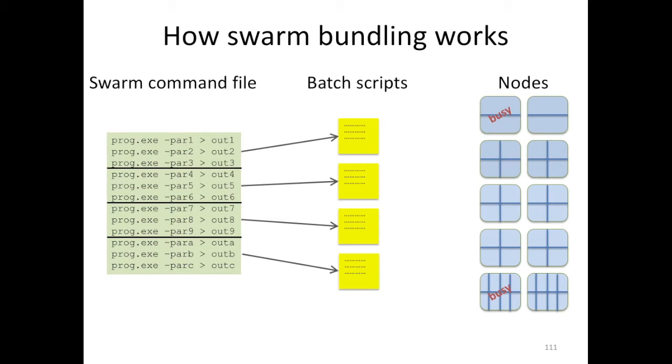If I submit the swarm with swarm -b 3, then swarm will break the swarm command file into groups of three commands. Each of these three commands will be put in a separate batch script, so that you'd get a total of 4 batch scripts. Each of those batch scripts would contain the three commands sequentially, one after each other.